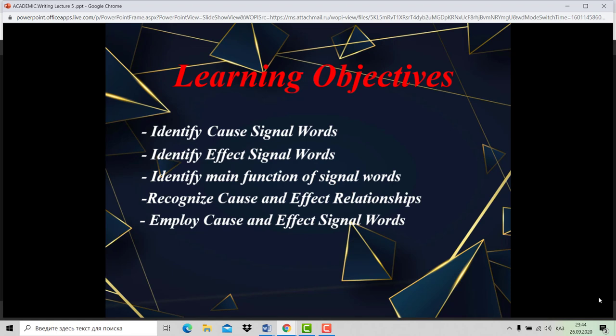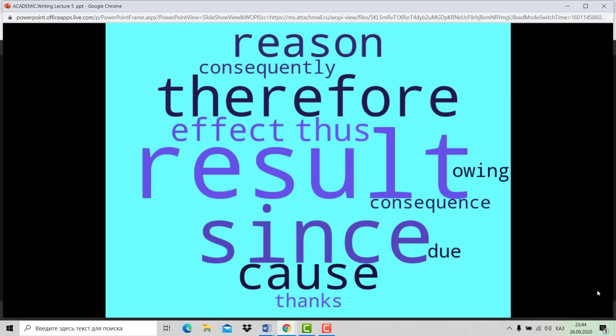Effect is defined as what happened. Cause is defined as why something happened. Clue words that signal causal relationships include such as because, so, consequently, therefore, thus, and since.